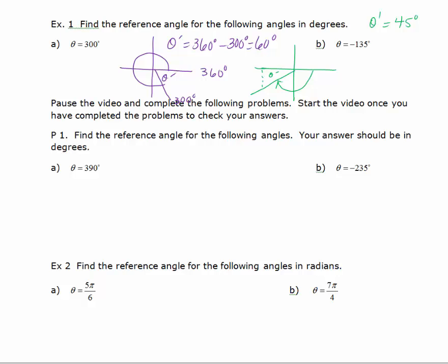If you find that confusing, you can find a coterminal angle and find its reference angle, since an angle and its coterminal angle have the same reference angle. To find a coterminal angle, just add 360 degrees. So negative 135 plus 360 gives us 225 degrees. Drawing 225 degrees: this is 180 degrees, and 225 degrees is just past that. The little angle in here is 225 minus 180, which gives you 45 degrees — so the reference angle is 45 degrees.